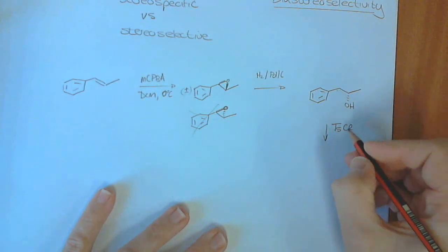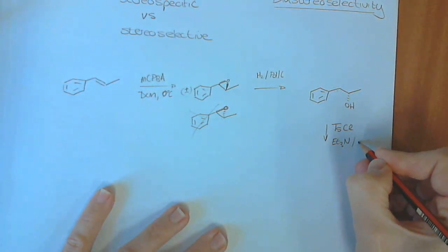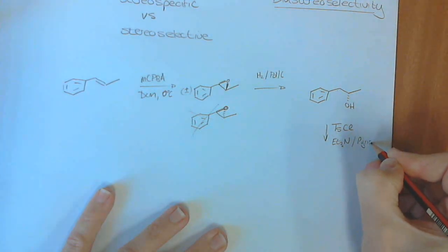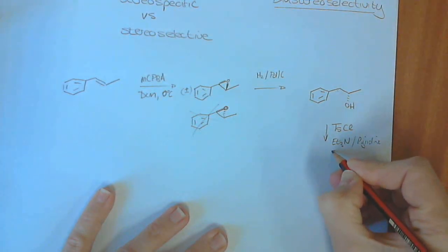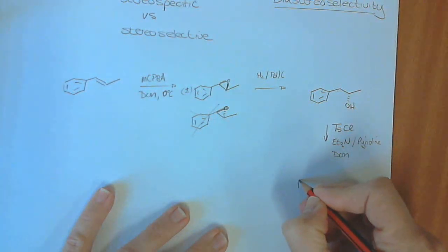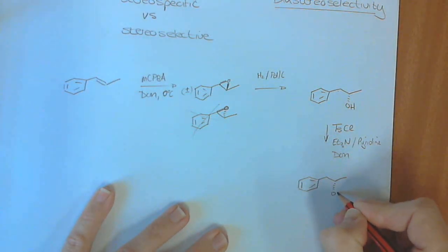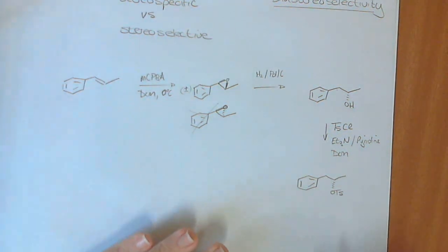If you don't know what tosyl chloride is, you need to go and look that up. And we would use a weak base. It could be triethylamine or it might have been pyridine. It is good, and the solvent would also have been dichloromethane. And our product would now be the tosylate of this OH group, which still has the same stereochemistry.